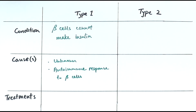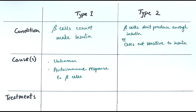Type 2 diabetes is a situation where the beta cells don't produce enough insulin, or more commonly, the body cells are no longer sensitive to insulin. This type tends to occur in people over 40 years old, generally those who are obese or overweight and leading an unhealthy lifestyle — though increasingly, younger people are also developing type 2 diabetes due to lifestyle choices.